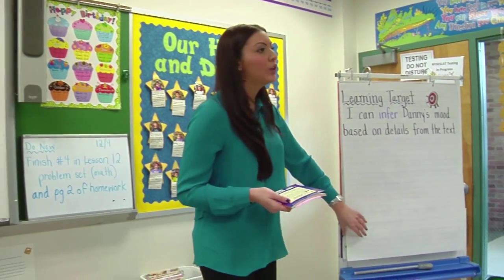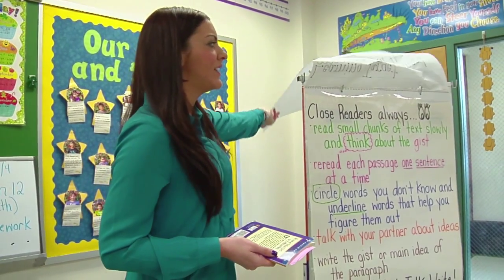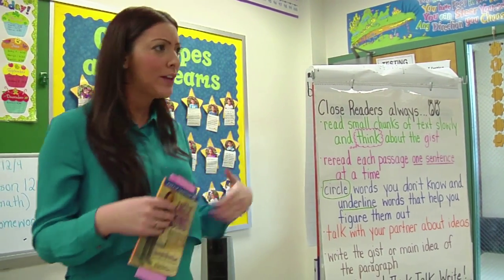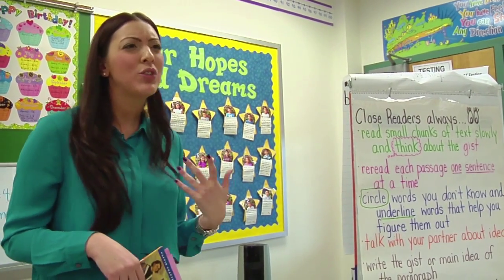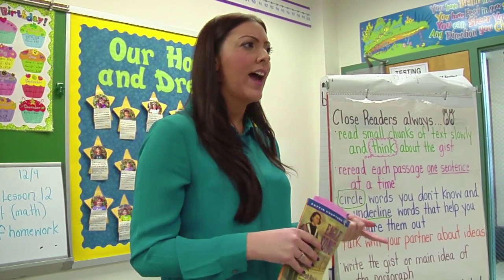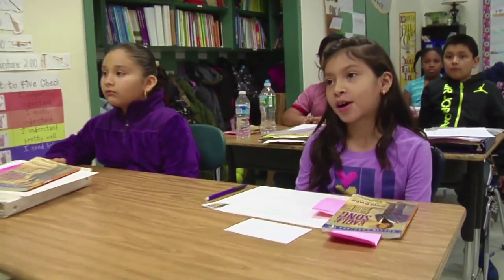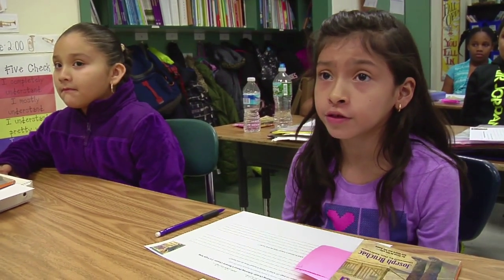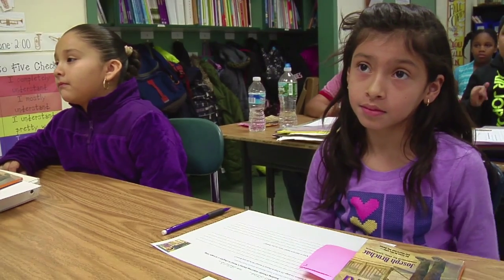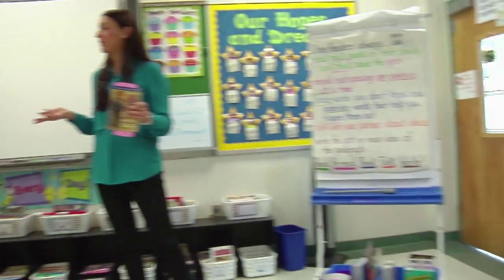Today we're going to use close reading strategies to help us find evidence. Can someone name one thing that we do as close readers? Marilyn, why don't you share? You circle words that you don't know and underline. Excellent — so really finding words you're unsure of and using the words around them to guess or figure out what they mean.